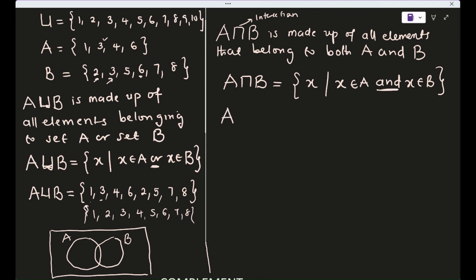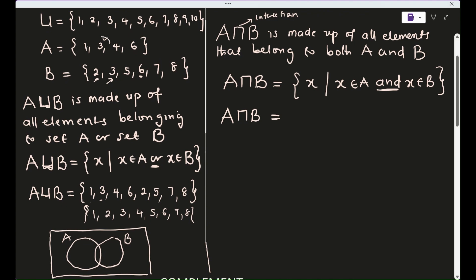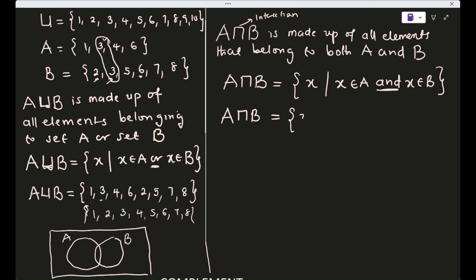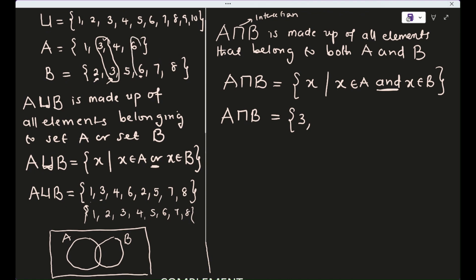To find A ∩ B, look for elements appearing in both sets. For example, 1 is in A but not in B, so it's excluded. But 3 is in both A and B, so it becomes a member. Similarly, 6 is in both. So A ∩ B = {3, 6}.